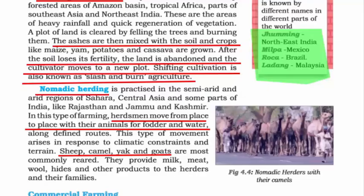Nomadic herding involves animals like camels, sheep, goats, and cows. Nomadic people move from one place to another in search of food and shelter. It is usually practiced in semi-arid and arid regions of the Sahara, Central Asia, and some parts of India like Rajasthan and Jammu and Kashmir. In simple terms, you move from one place to another with your animals for food and water, and whatever the animals provide is consumed by the herder and their families.